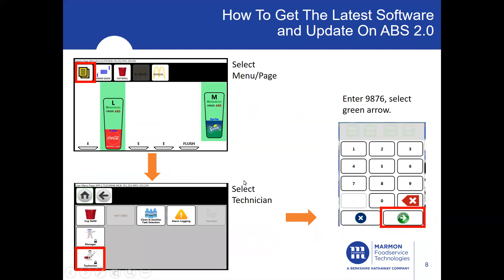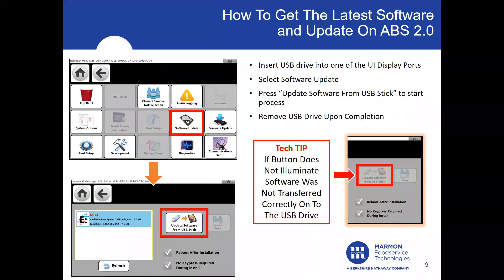Now we're going to go to the unit. Select Menu, then go into Technician. The passcode to enter Technician is 9876 — select the green arrow. Then locate Software Update. Insert the USB drive into one of the UI display ports. Once you select Software Update from the screen, you'll get a secondary window. At this moment your USB should already be inserted on the unit, and the Update Software from USB button will be lit up.